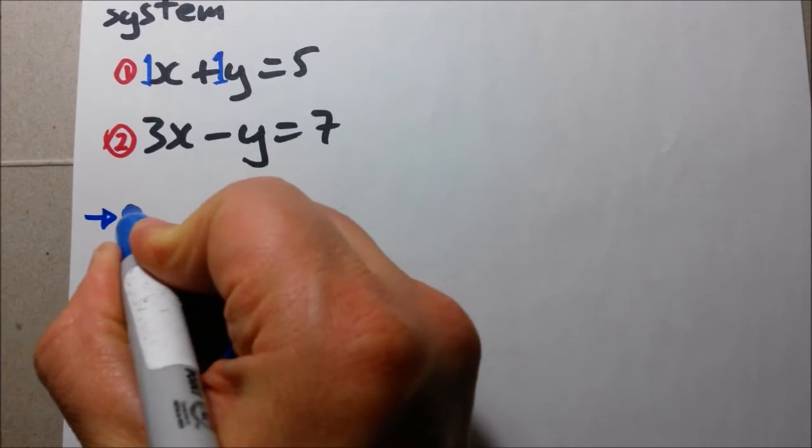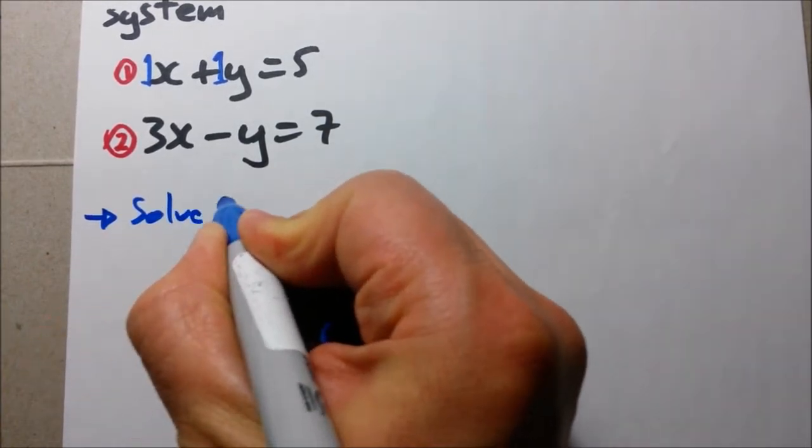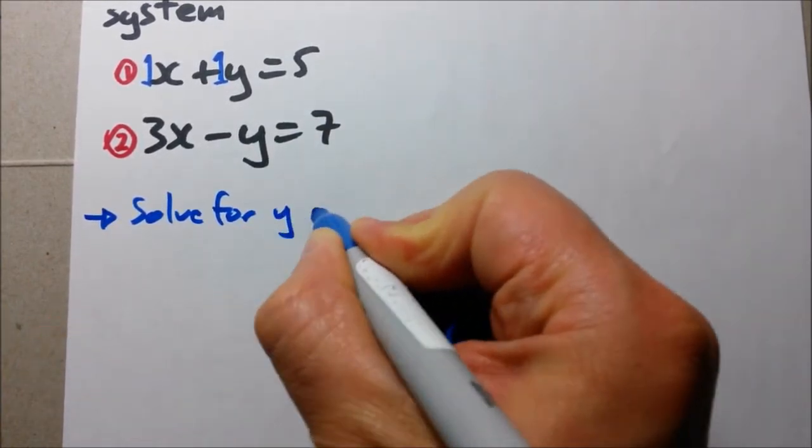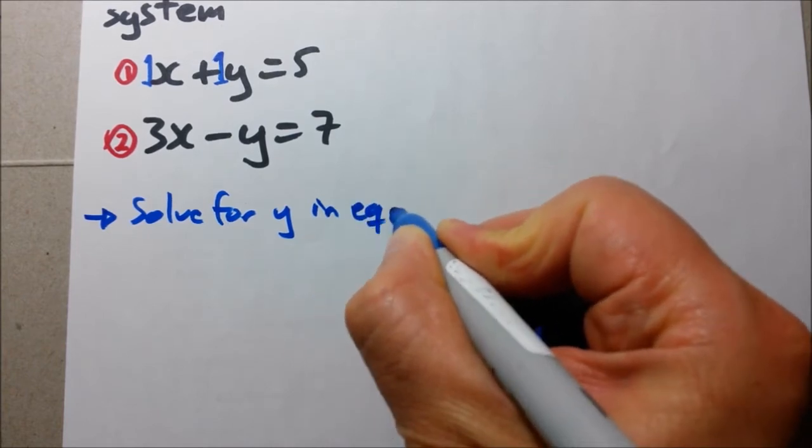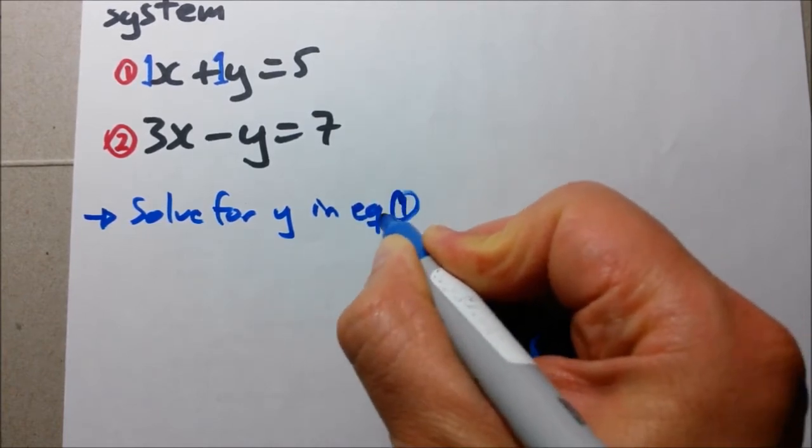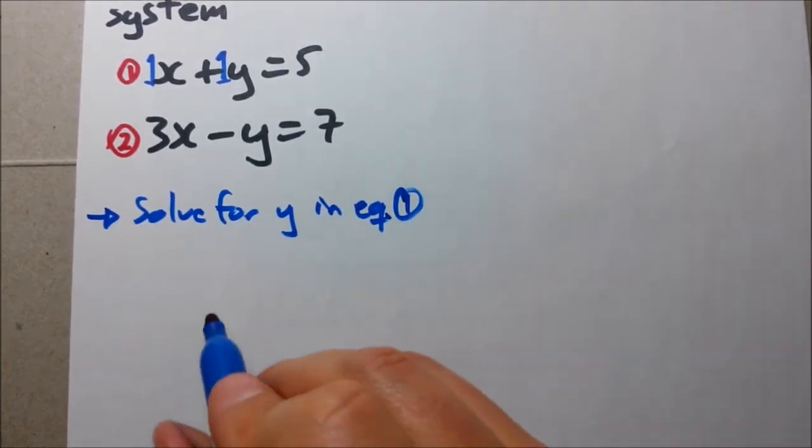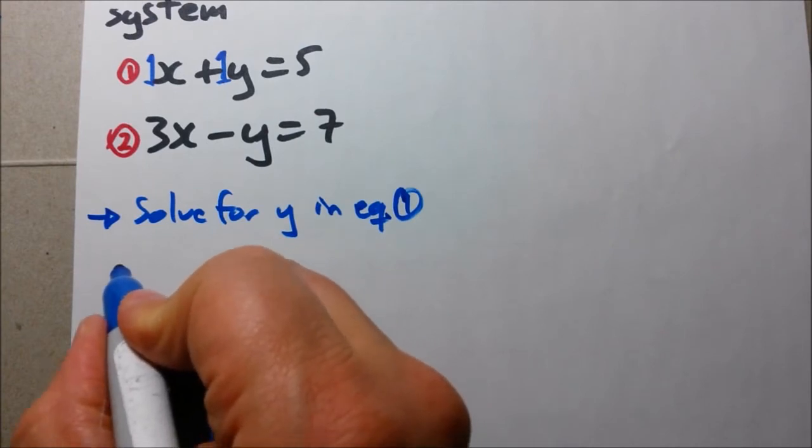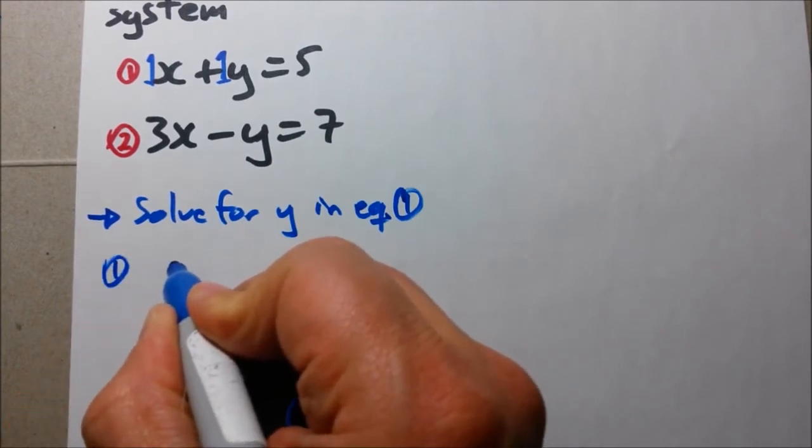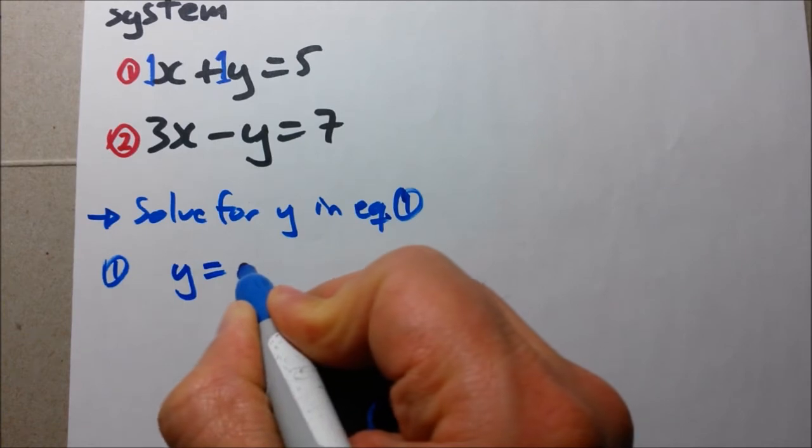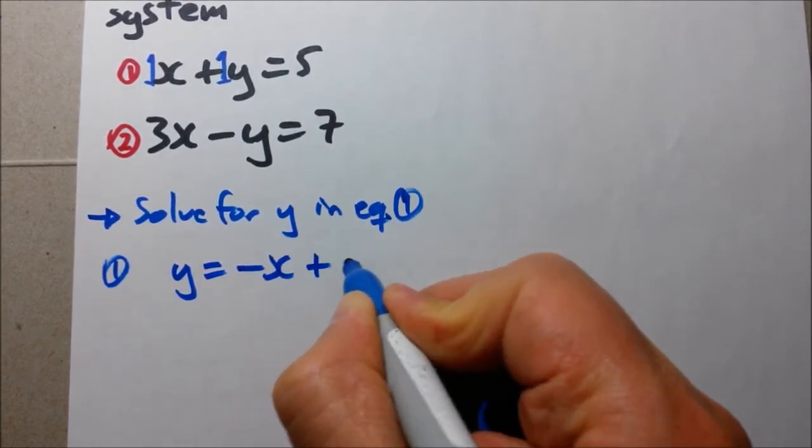First step is solve for y in equation 1. Alright, so let's do that. So we grab equation 1. Our equation 1 will now be y equals negative x plus 5.